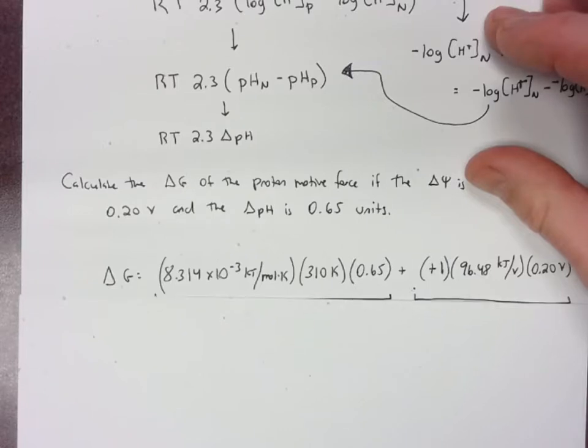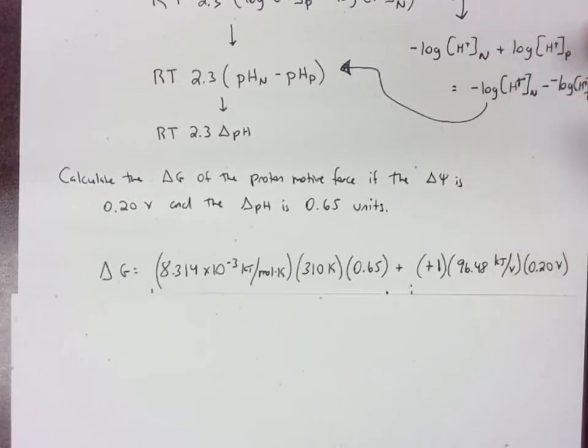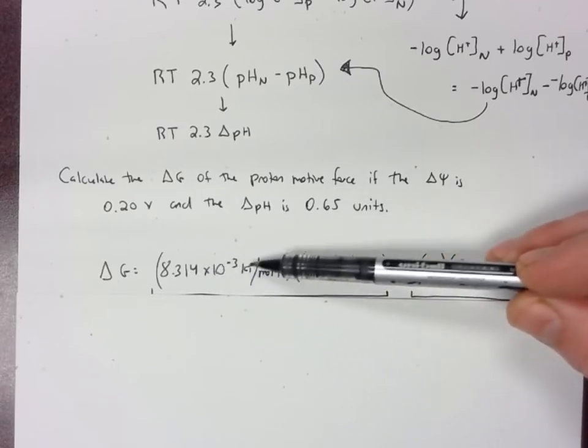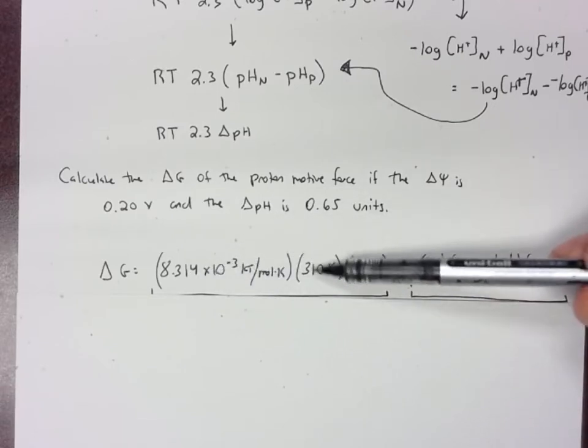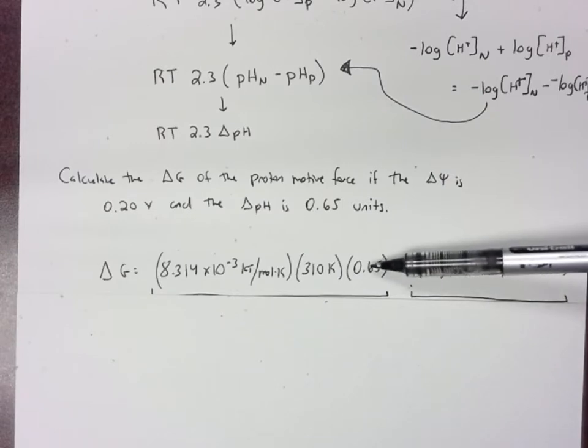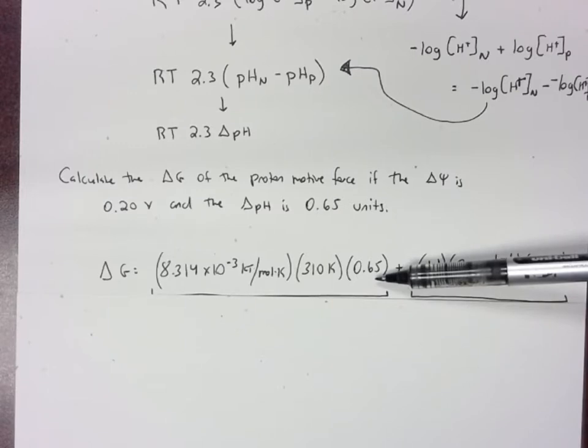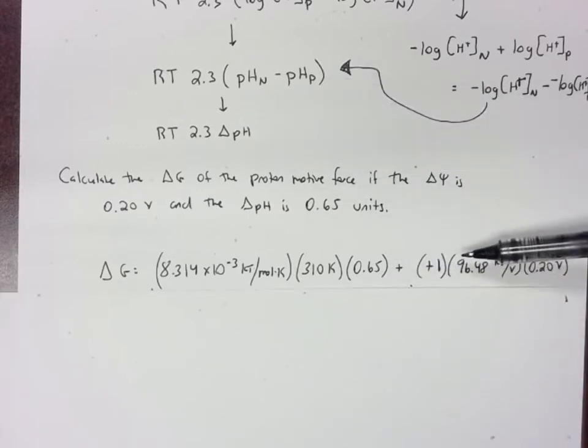I'm using the gas constant in kilojoules, so I've got 8.314 times 2.3 times 310 Kelvin, which is temperature inside most living things, and 0.65 for the ΔpH. And then I'm adding to that the energy from the electrical potential.